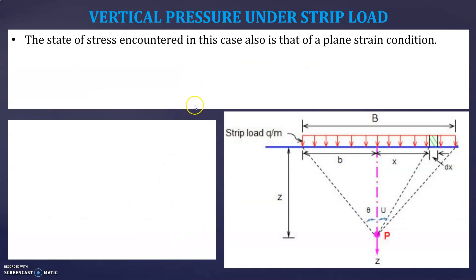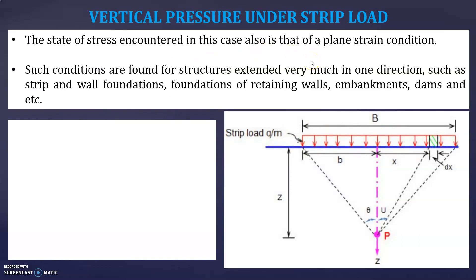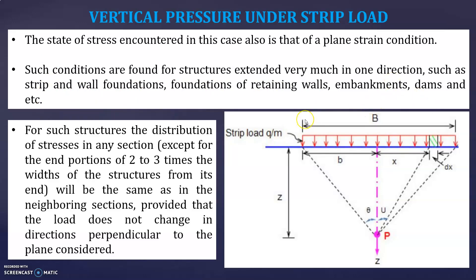Now let us take the next case: vertical pressure under a strip load — a load of q per meter length. The state of stress in this case is that of a plane strain condition. Such conditions are found for structures extended very much in one direction, such as strip and wall foundations, foundations of retaining walls, embankments, dams, and so on. For such structures, the distribution of stress in any section (except for end portions 2 to 3 times the width from its end) will be the same as in neighboring sections.